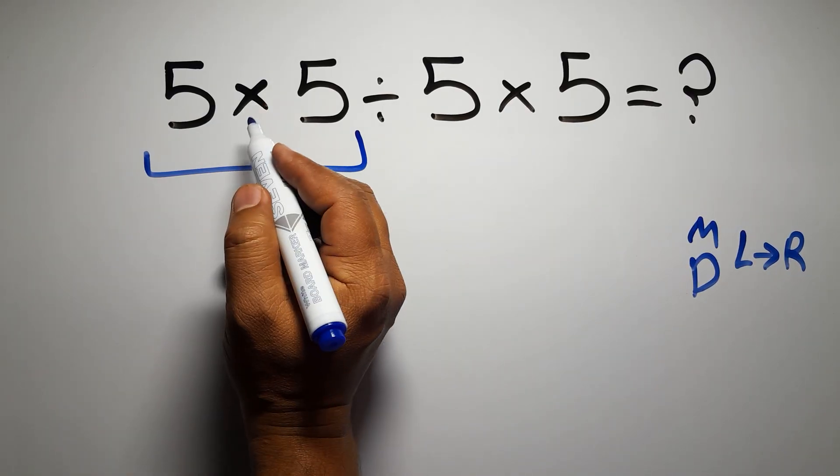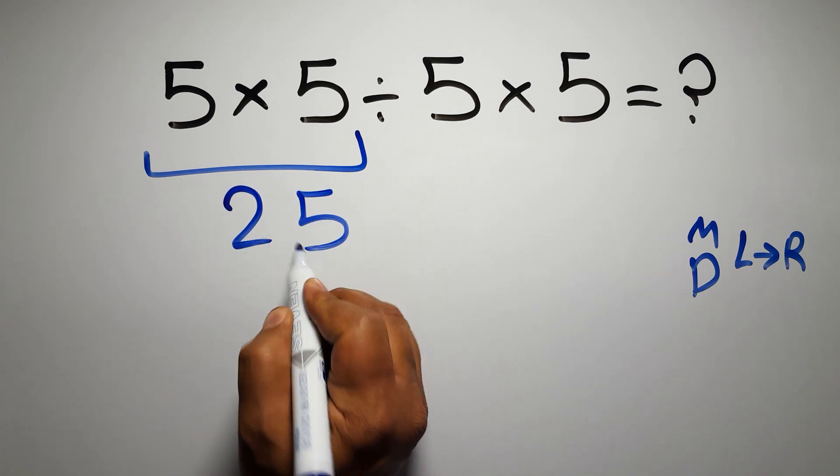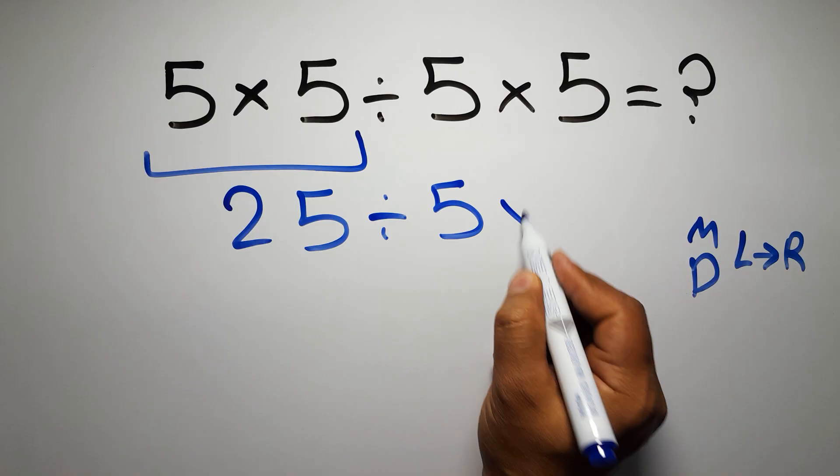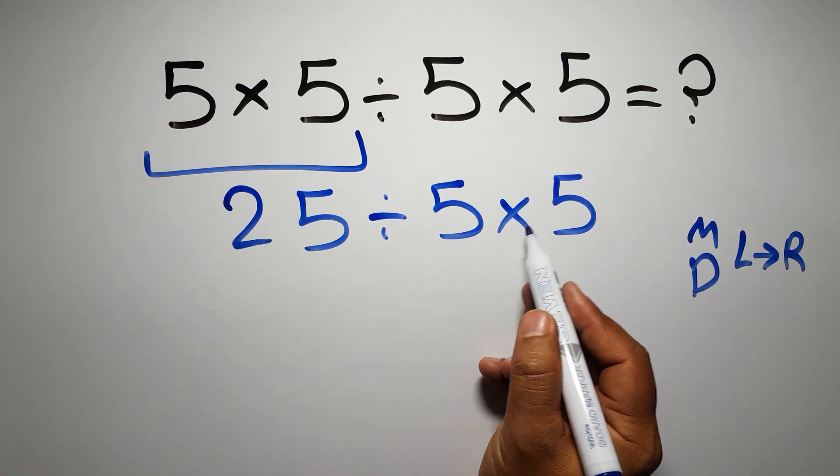So first this multiplication: 5 times 5 gives us 25, so 25 divided by 5 times 5. Now we have one division and one multiplication.